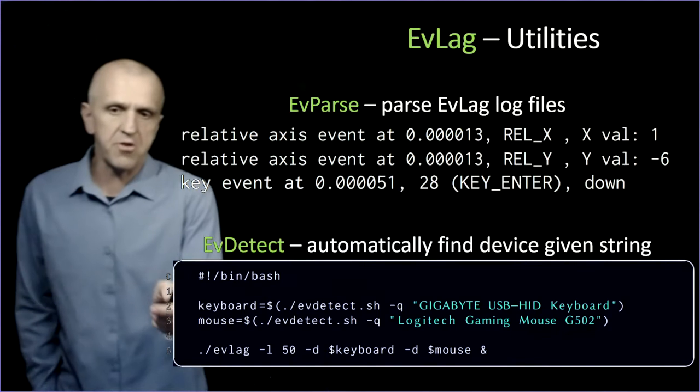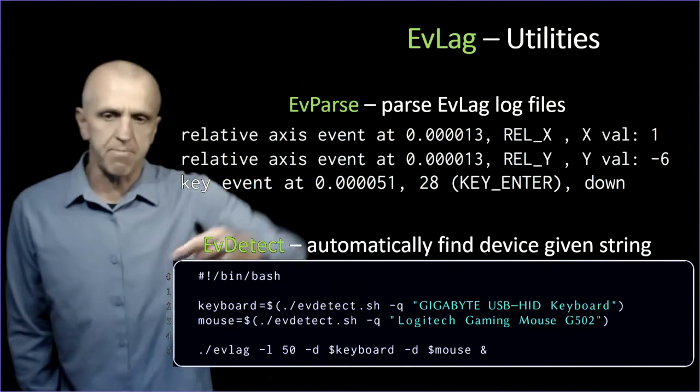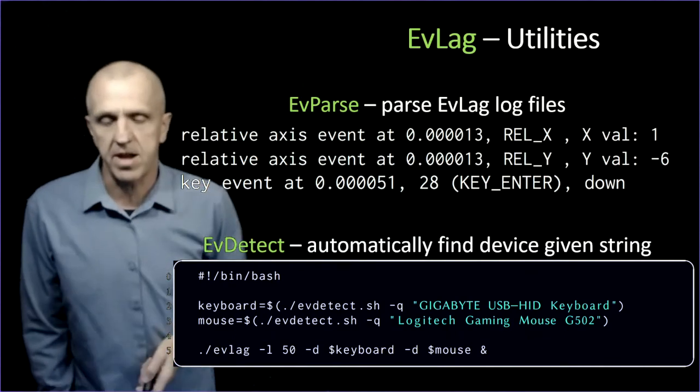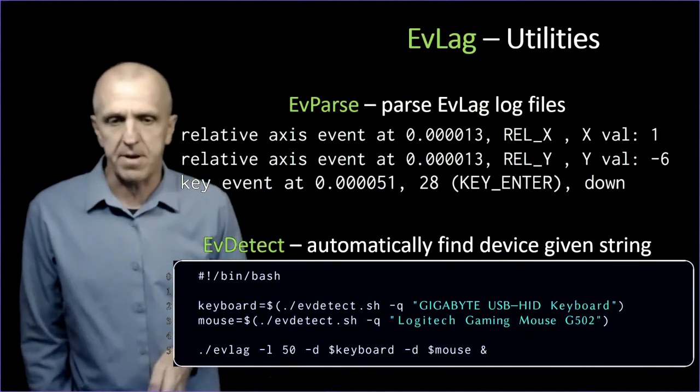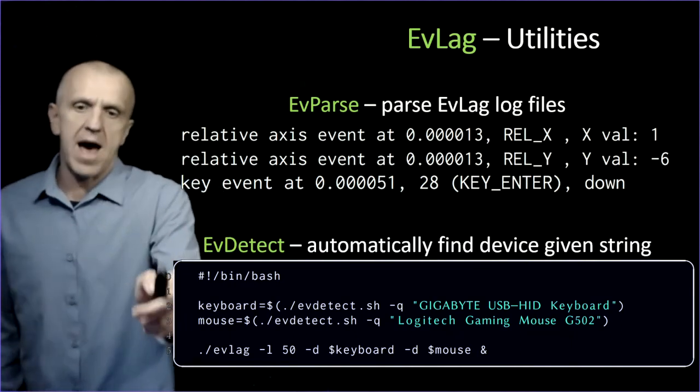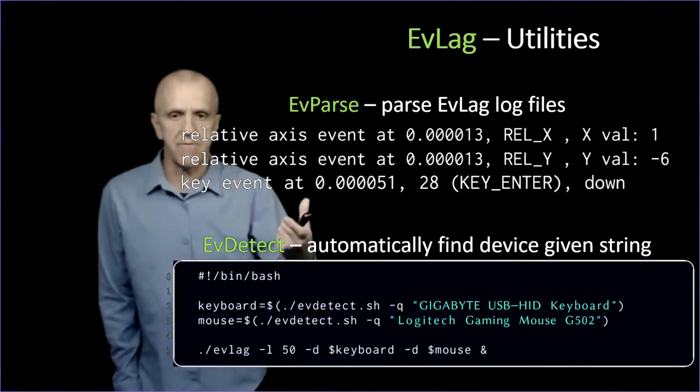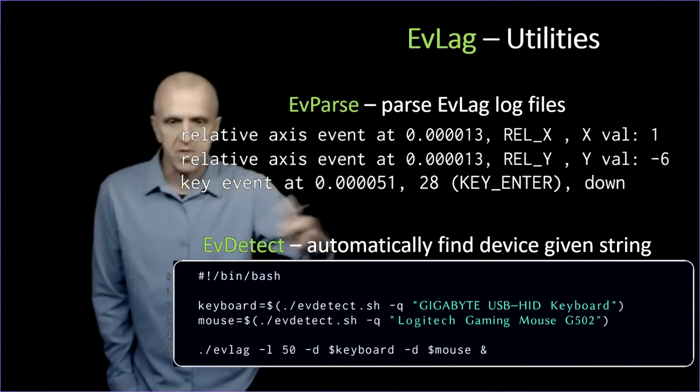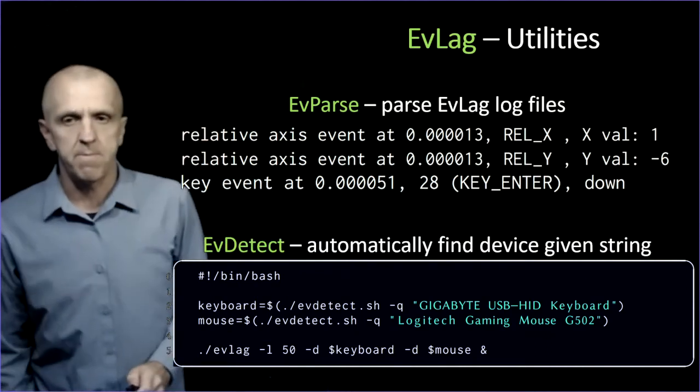This is another utility, EvDetect. If you take an input device and plug it into a different USB port, it might have a different event number. If you have a script that automatically does this for your experiments, it can break, and it happened to us. This is a script that uses EvDetect to match a string, find out what input device it is, and gives you the input device number. It can be useful for automating some utility. They come with the repo.